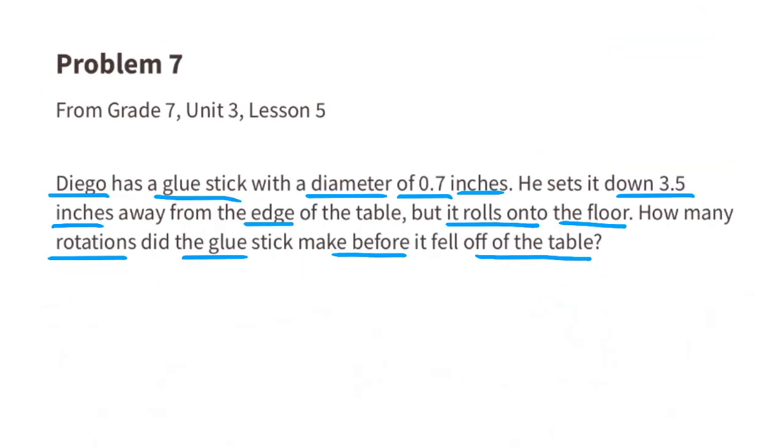Problem number 7. From 7th grade, Unit 3, Lesson 5. Diego has a glue stick with a diameter of 0.7 inches. He sets it down 3.5 inches away from the edge of his table, but it rolls onto the floor. How many rotations did the glue stick make before it fell off the table?